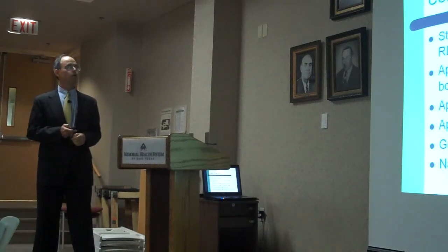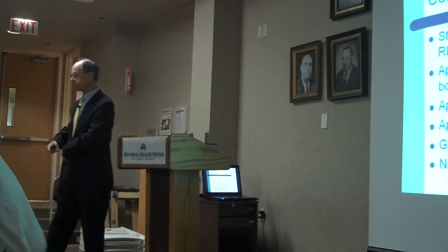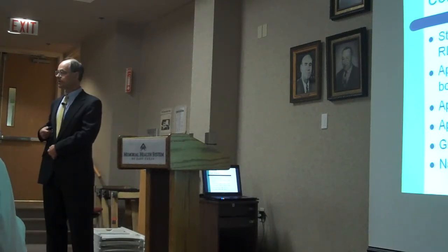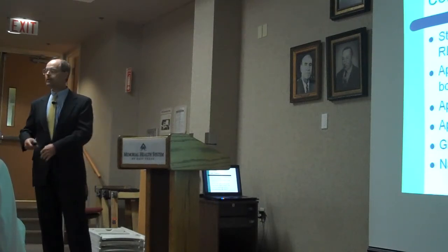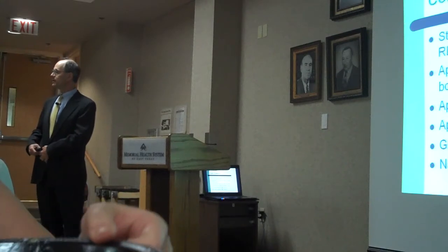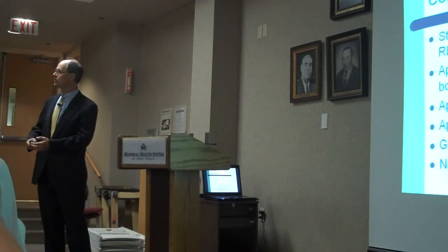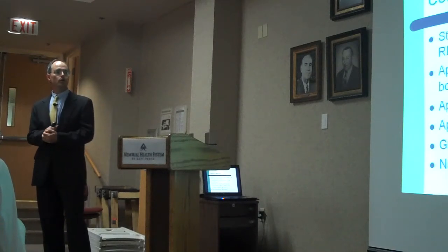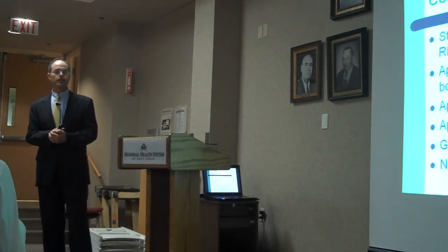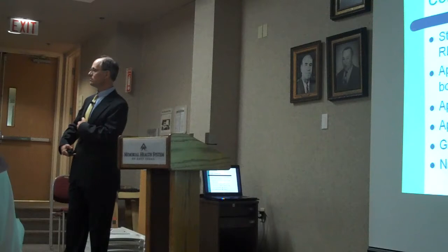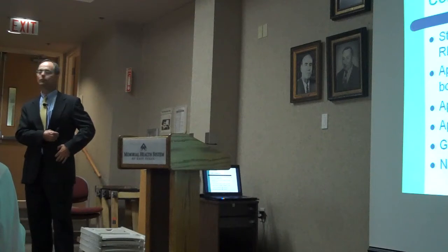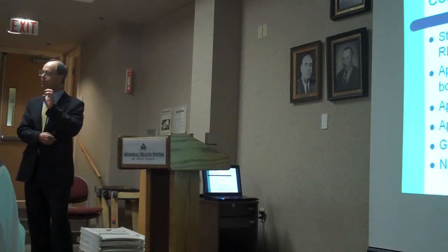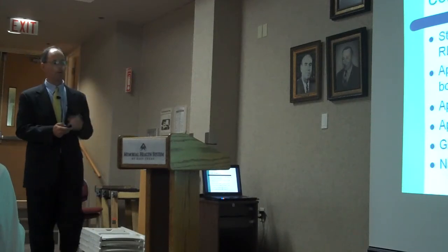Your colon starts in your right lower quadrant, comes up as the ascending colon, then you have your transverse colon, then it goes down as the descending colon, and then you have your rectum. Your appendix lies at the junction where the small bowel interfaces with the colon. When you're born, your colon is approximately two feet in length, and by adulthood it's about five feet. The cecum — the ascending portion — is the largest diameter, while the left side, going down to the rectum, is the narrower portion.